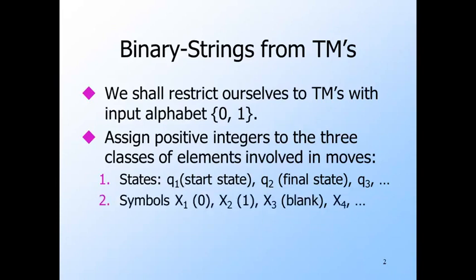The tape symbols are also numbered starting at 1. We'll assume X1 is always the input symbol 0, X2 is always the input symbol 1, X3 will always be the blank, and any other tape symbols are numbered 4 and above. There are two directions, but we need to number them: D1 is left and D2 is right.